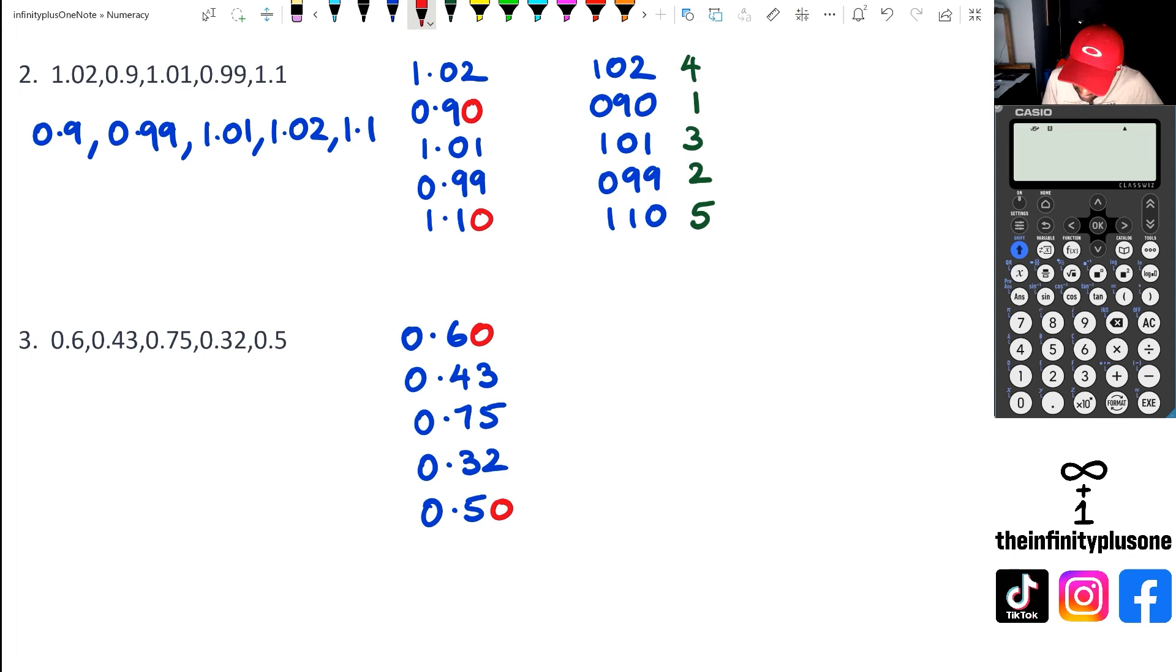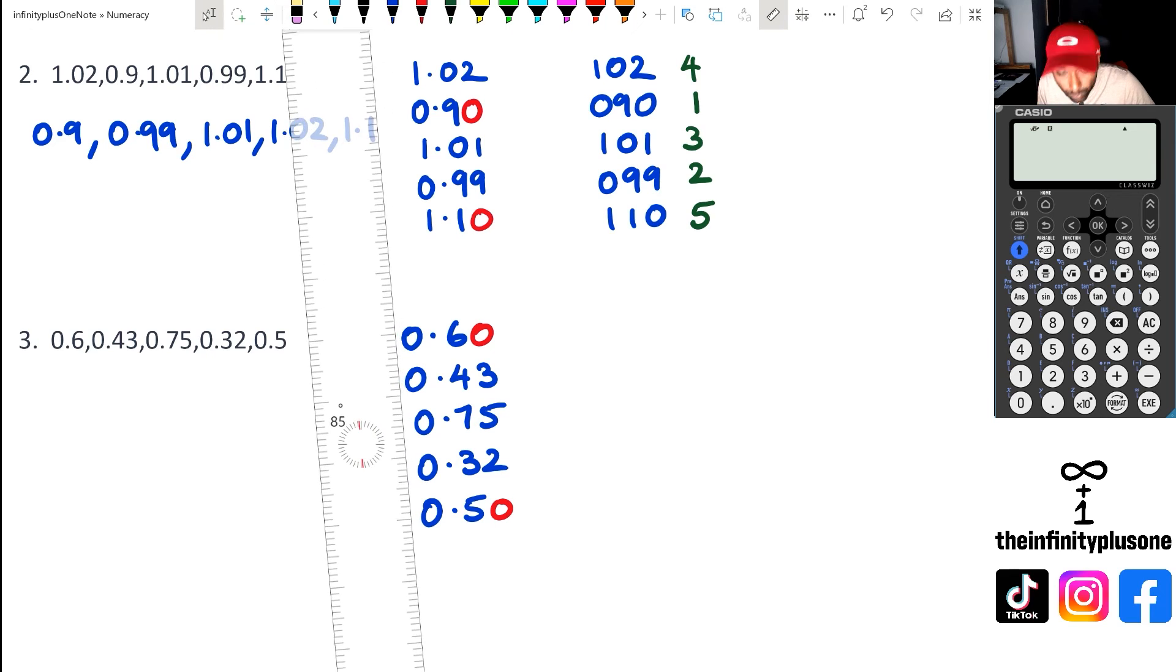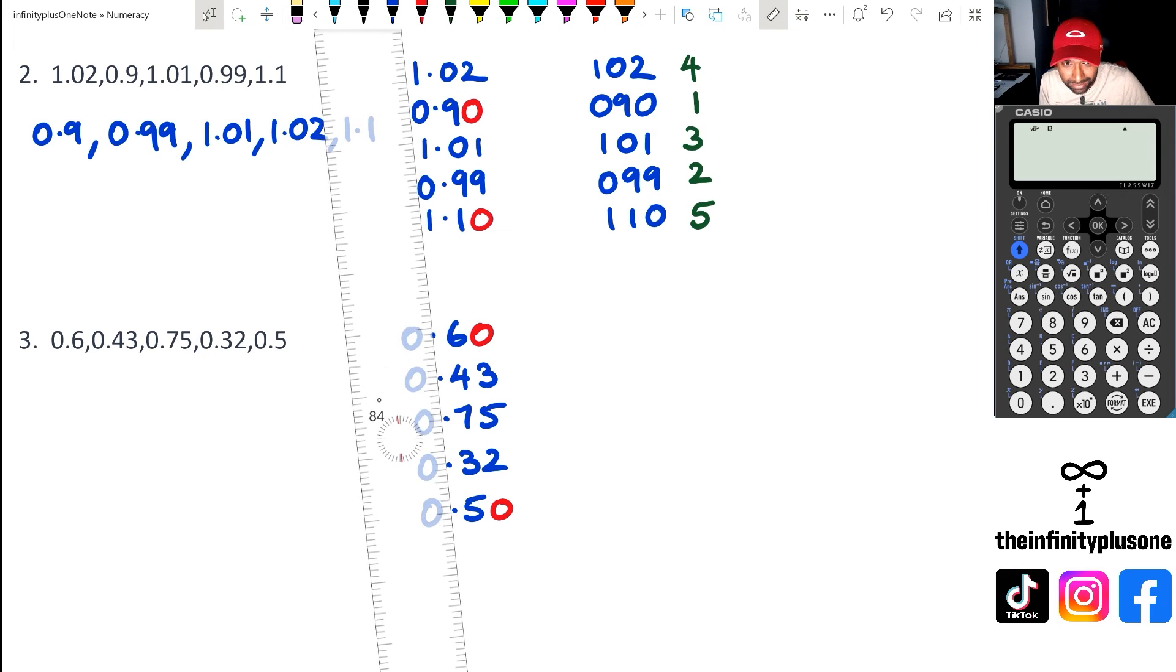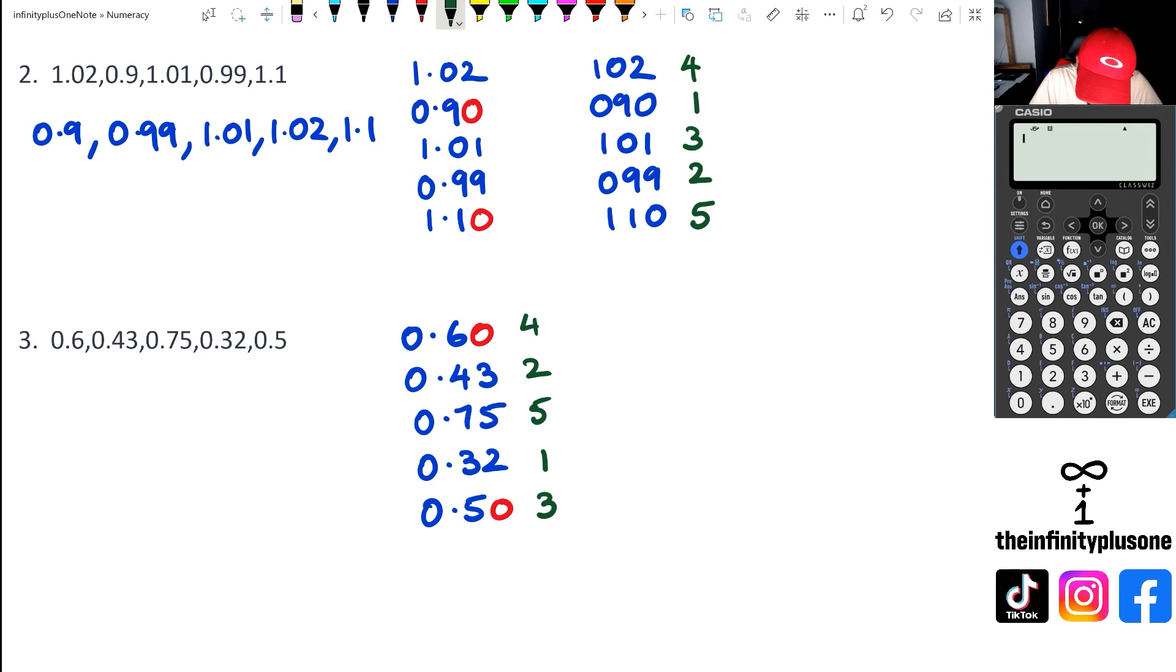I don't have to worry about the zeros because they're all the same. I'm covering up the zeros and the decimal point, and now all I can see are the numbers. I can arrange them in order: 32 is the smallest, then I've got 43, 50, 60, and 75.